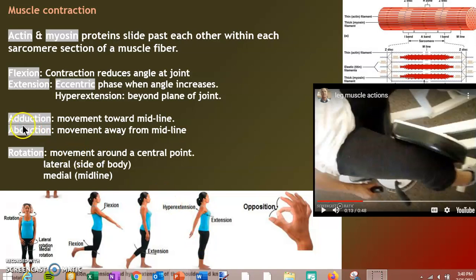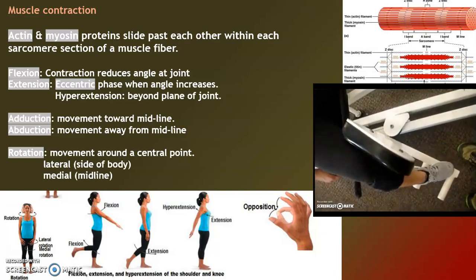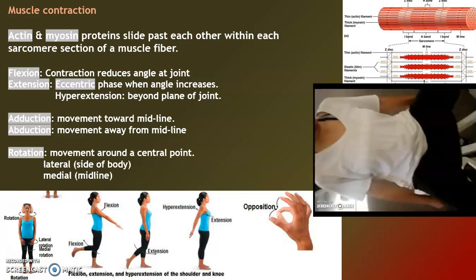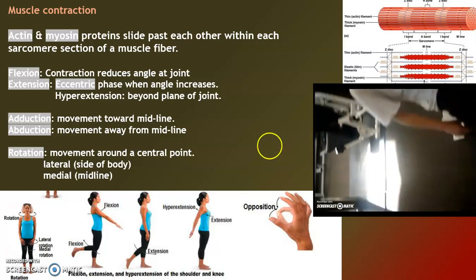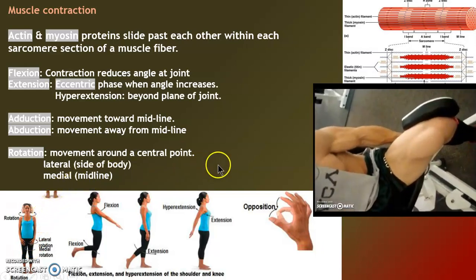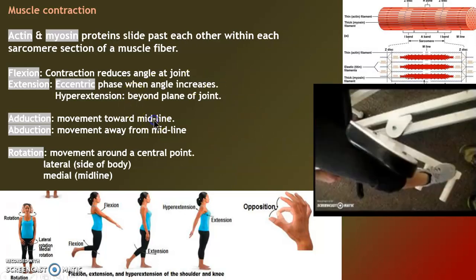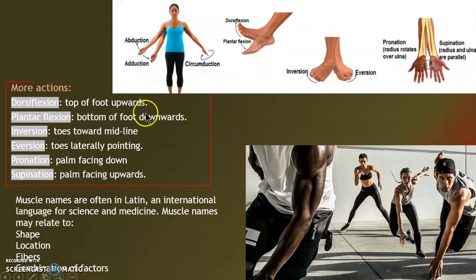Extension increases the angle. Adduction means adding to the middle; ab- is away — like abduction in a hospital, that's a pink code. Alexa is showing us good abduction, moving the knees away from the midline using her lateral muscles. Danny is going to show us a good example of adduction, using his adductor muscles to move towards the midline.